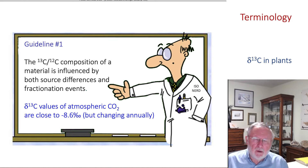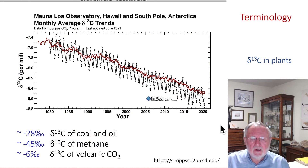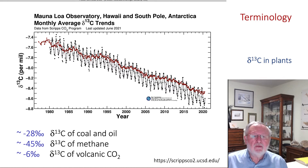The carbon isotope ratio values of atmospheric CO2 are close to about minus 8.6 today, and they are changing annually. Here are data from Ralph Keeling's site at UC San Diego, showing monthly variations in the average carbon isotope ratio of the atmosphere over the last 40 years. Clearly there's been variation from about minus 7.5 to almost minus 8.5 or 8.6 today.